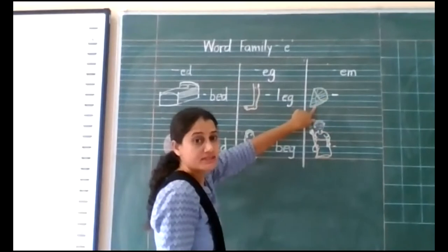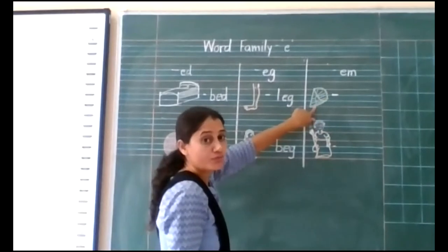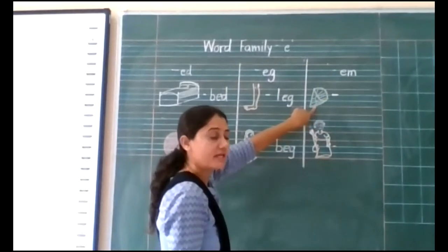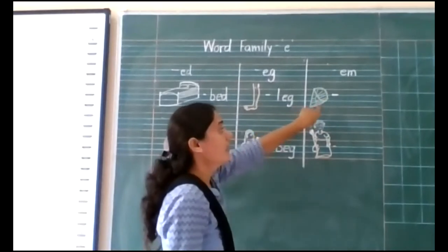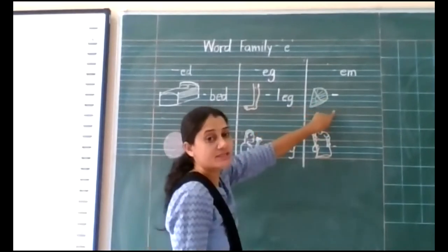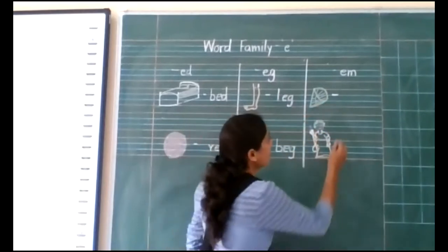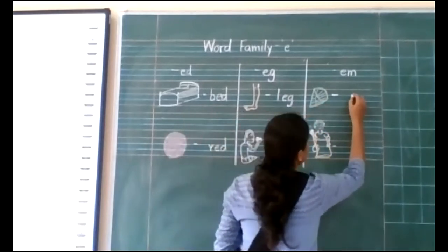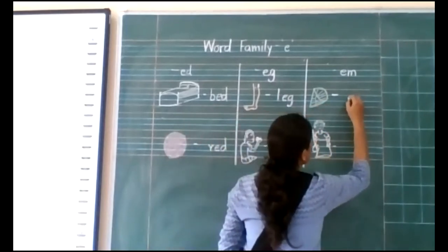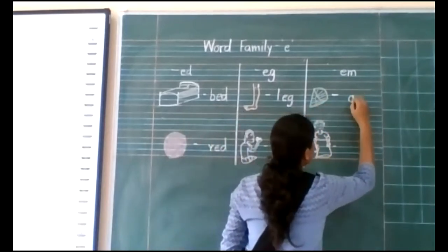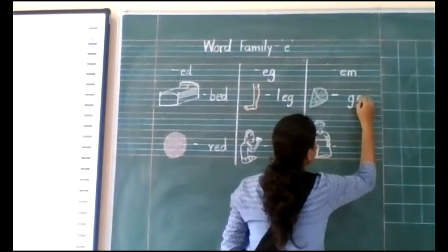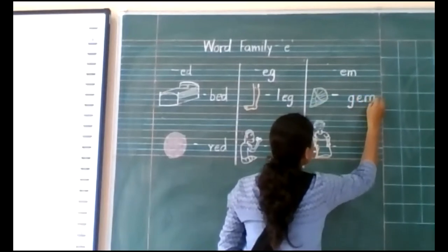What is this? This is a type of stone. Which stone? Gem stone. And the word starts with the sound J. J-E-M, gem.